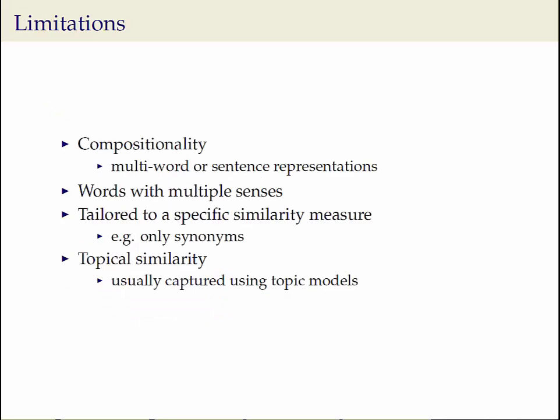Representing words as dense numerical vectors has some limitations. First, compositionality of words is harder to model — in order to obtain an embedding for a sentence, one does not obtain good results just by adding the words' vectors together. Some words have multiple senses, and these are not captured by a single vector for a word. Word embeddings may also need to be tailored to a specific similarity measure to be useful for a task.